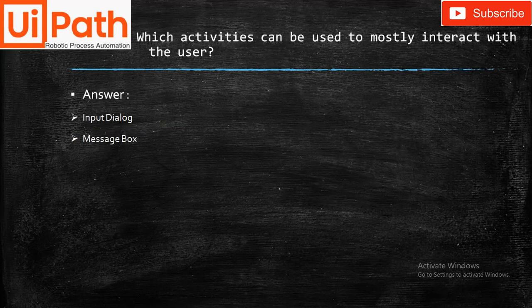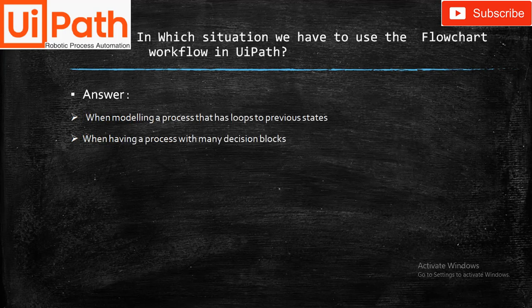Which recording profile is used to generate a full selector in UiPath? The answer is Basic recording. Which activities can be used to mostly interact with users? The answer is Input Dialog and Message Box — they are used for providing input with the user or displaying data. Message Box is also for the user.